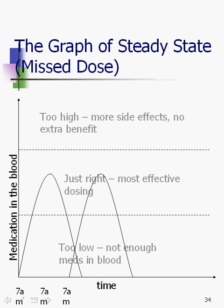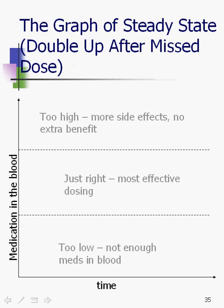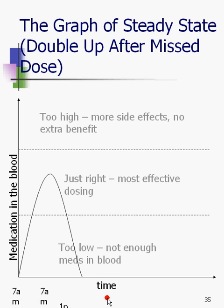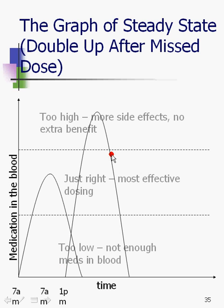The real issue is not a single missed dose. I want to show you what happens when somebody decides to double up after a missed dose. We have the 7am dose, it leaves, they forget at 7am, and then at 1pm they remember and double up. What happens is it goes right into the too-high zone, skips right past the just-right zone, and we have potential for a little bit of an open window in the too-low zone as well.